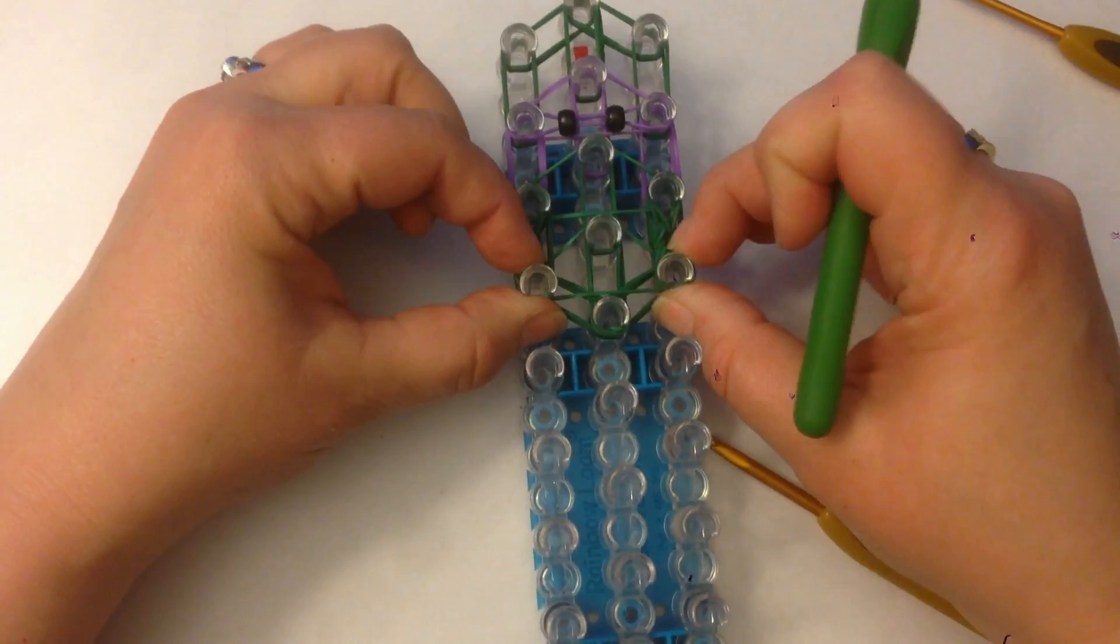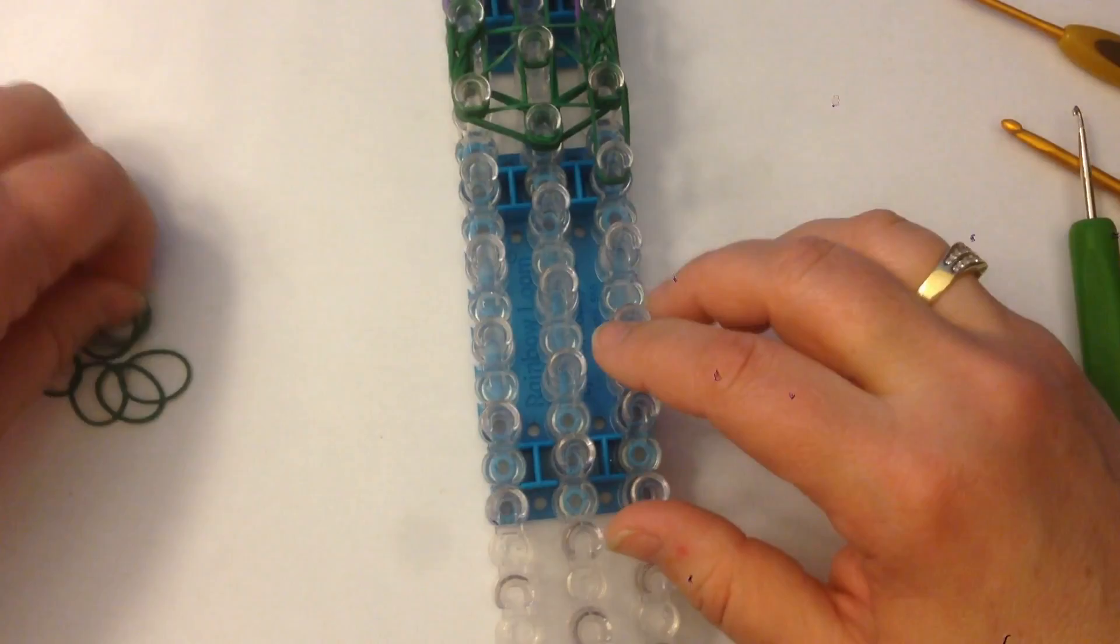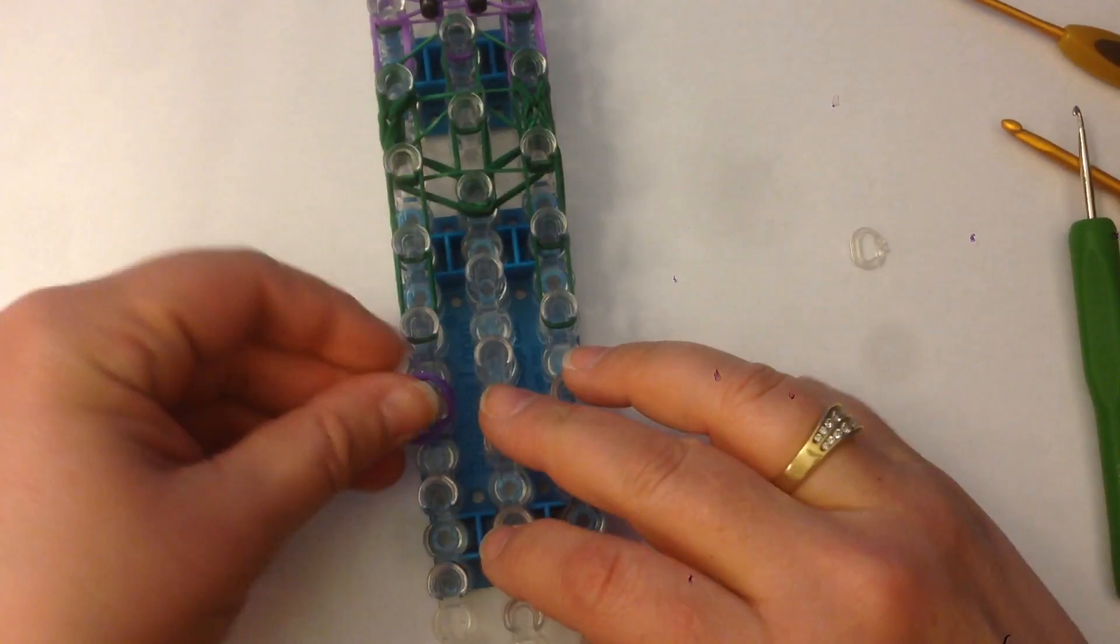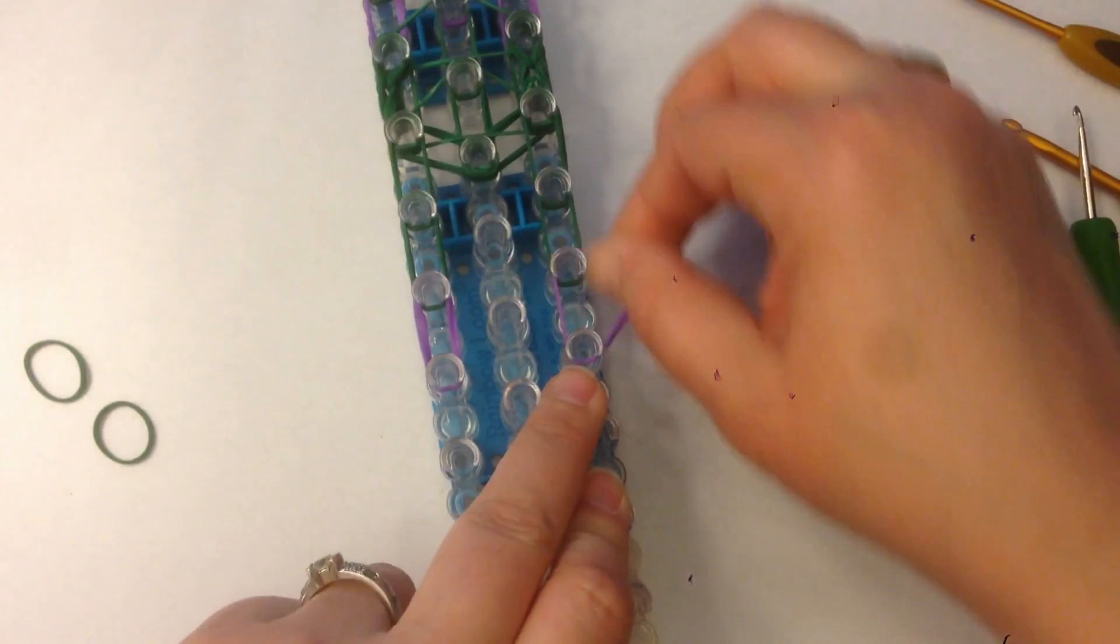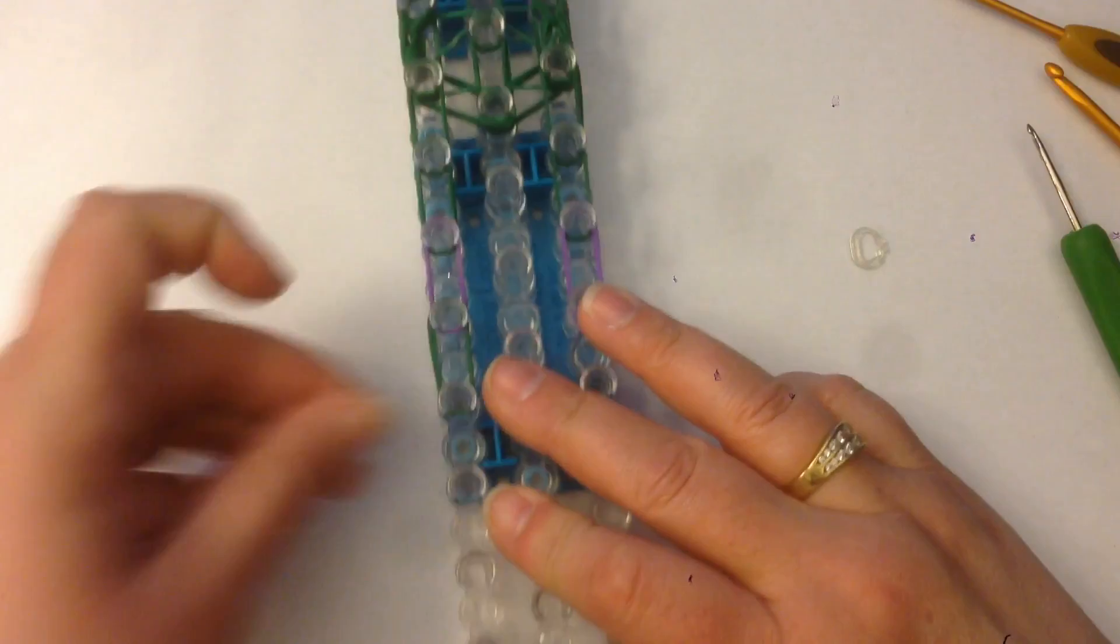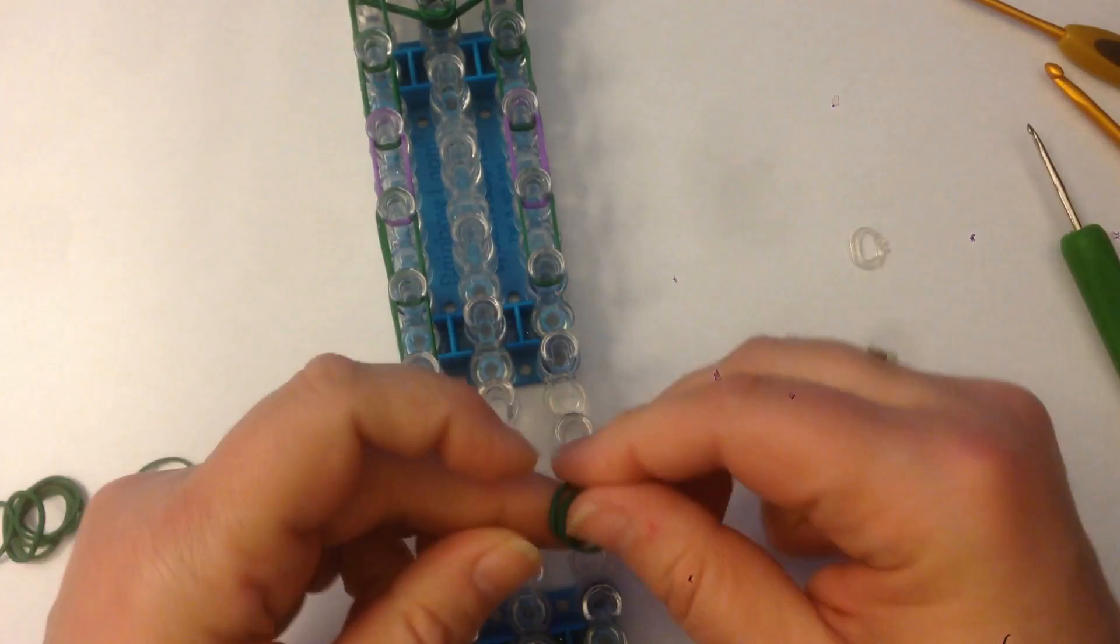Now we're also going to put the arms of our bracelet down here. We're doing two bands at a time, double banding. Two either side. Another two. Purple, two. And that's sort of indicative of his armbands. Then back to our green.